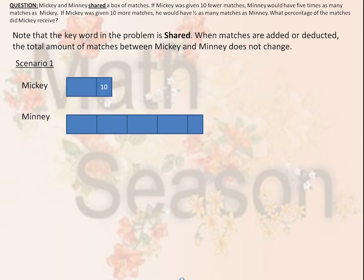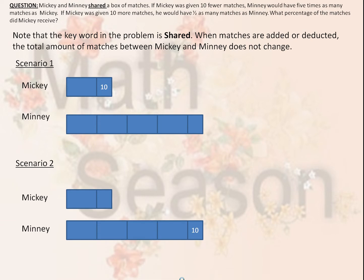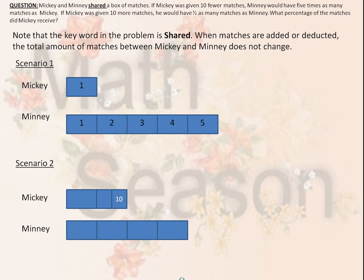Here's Scenario 1 and here's Scenario 2. When the 10 matches are given to Minnie, Mickey has 1 unit and Minnie has 5 units. Under Scenario 2, when Minnie gives Mickey 10 matches, Mickey gets 2 units and Minnie has 4 units — half as many as Minnie.